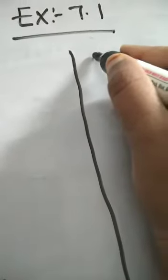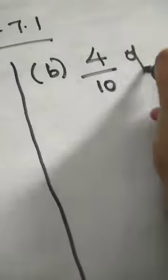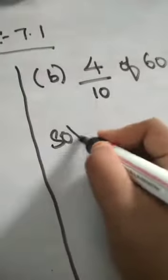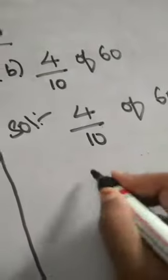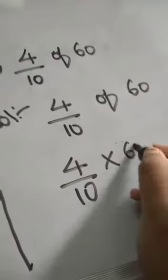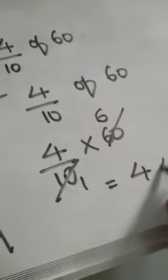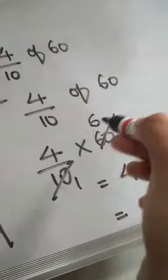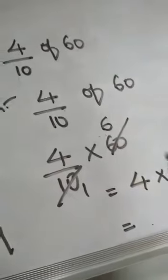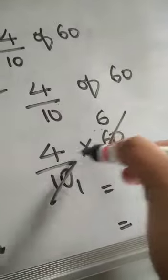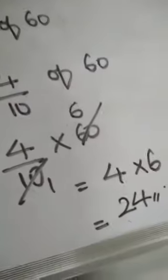Let us do the second problem, that is B: 4 by 10 of 60. So 4 by 10 into 60. 10 1s are 10, 10 6s are 60. I am cancelling this — 10 1s are 10, 10 6s are 60. So here 4 into 6 is left. 4 6s are 24.